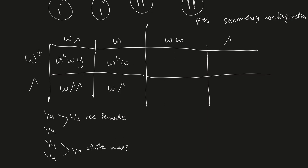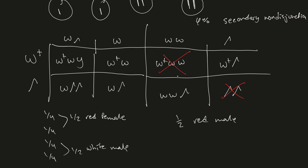For secondary non-disjunction: crossing WW with W+ gives W+,W,W — this dies because there are too many X chromosomes. Crossing W+ with Y gives W+,Y — a red-eyed male. Crossing WW with Y gives W,W,Y — a white-eyed female. Crossing Y with Y gives Y,Y — this dies. So from secondary non-disjunction, one-half of the surviving offspring are red-eyed males and one-half are white-eyed females.